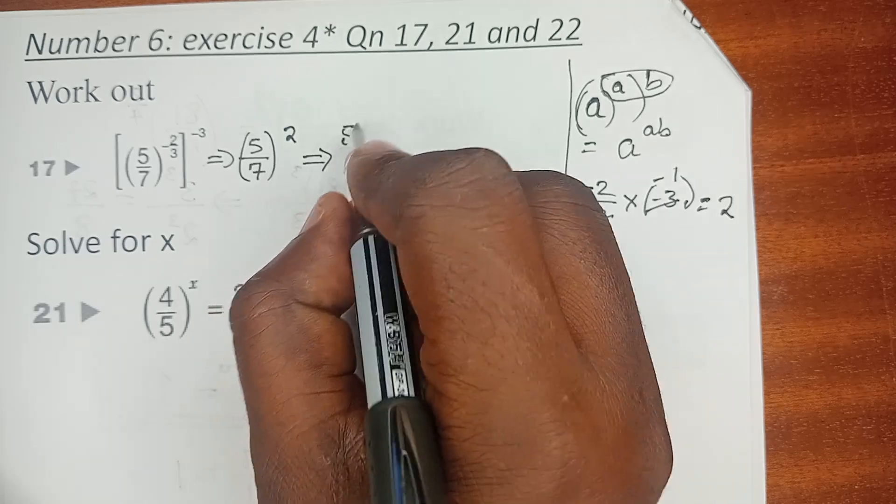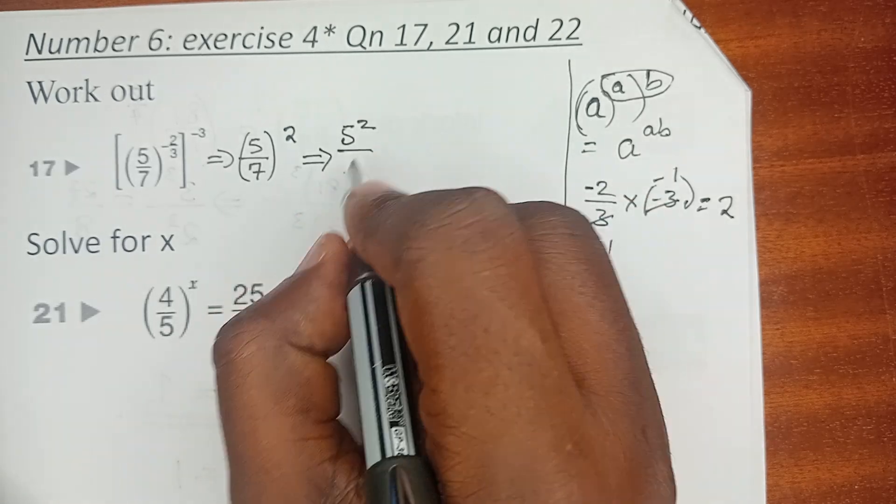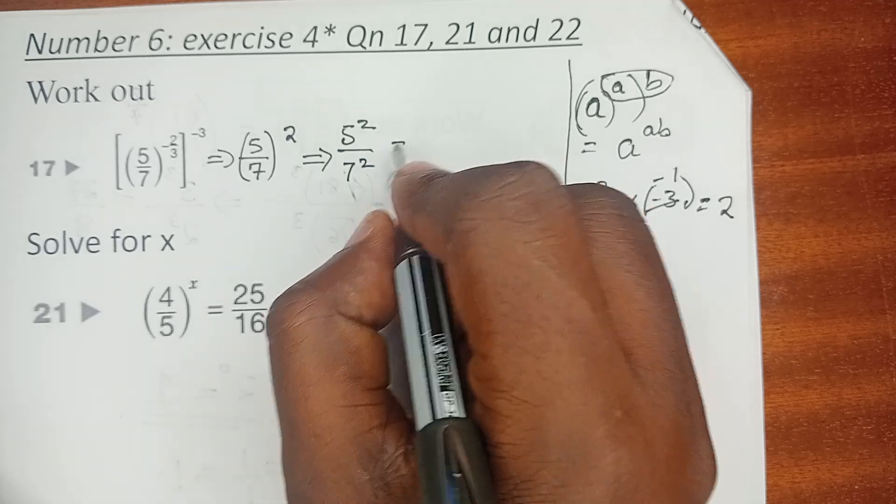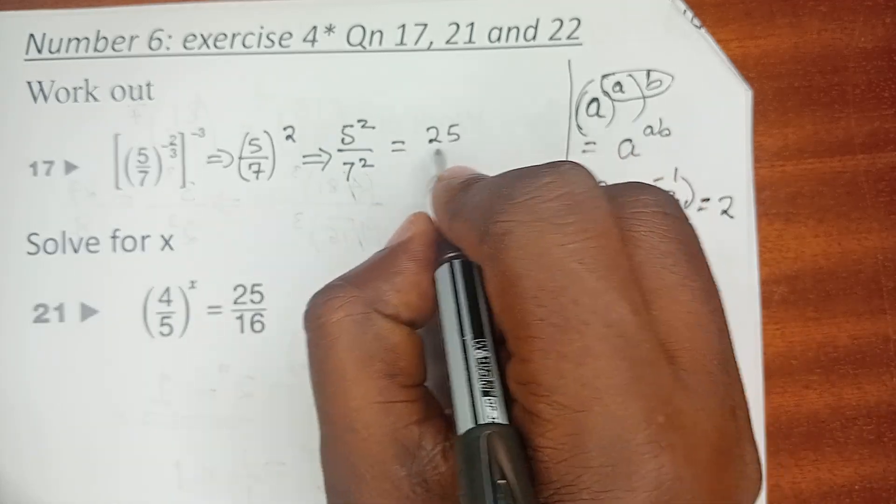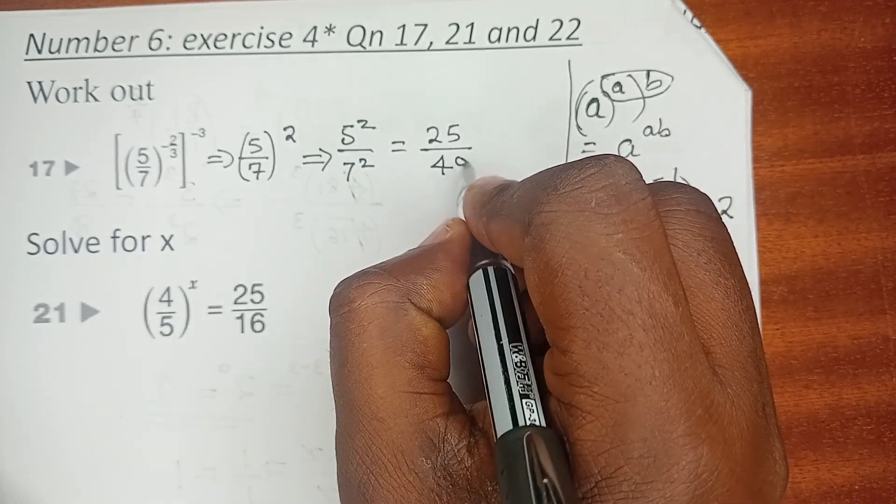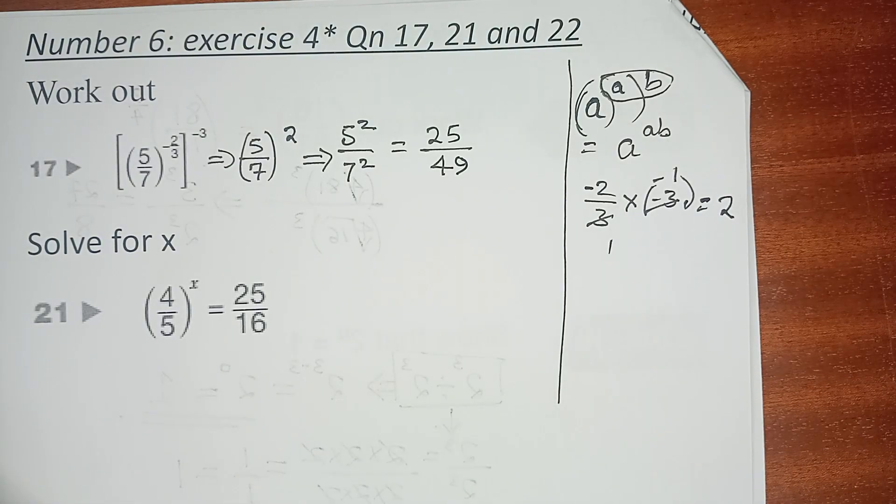So in this case, we have now 5 squared all over 7 squared, which is 25 over 49. And that is it.